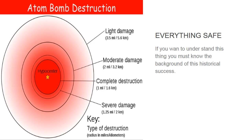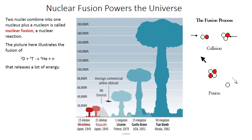Everything is safe. To understand this, you must know the background of this historical success. When an atomic bomb explosion occurs, many things are disturbed. Nuclear fusion powers the universe — two nuclei combine into one nucleus plus a nucleon; this is called nuclear fusion, a nuclear reaction. The picture here illustrates the fusion of 2D plus 3D → 4He plus N, releasing a lot of energy.